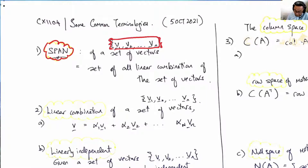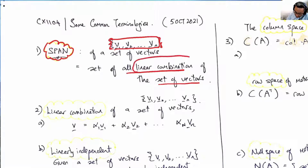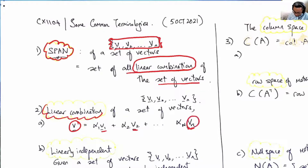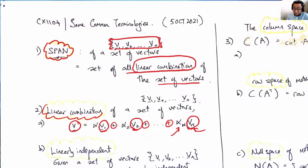When we say a vector space spans by a set of vectors, what we are saying is that the vector space consists of all linear combinations of the given set of vectors. A linear combination means we are given V1, V2, up to Vn, and we add these vectors up using only scalar multiplication with the given vectors. This is a linear combination of the given set of vectors.